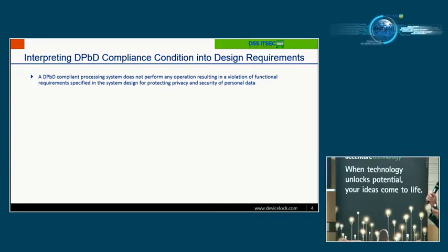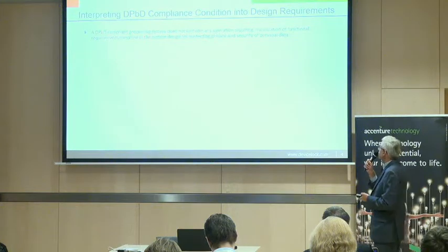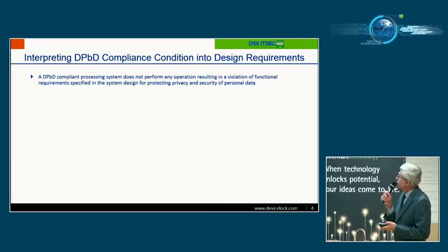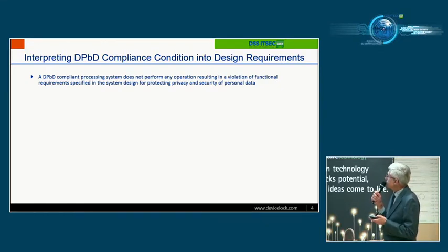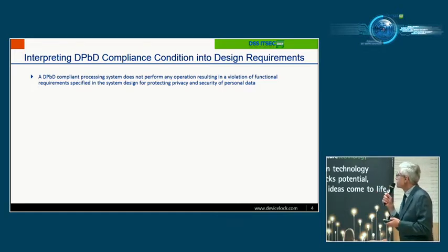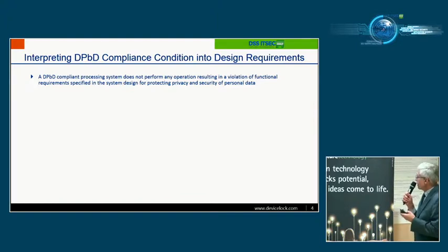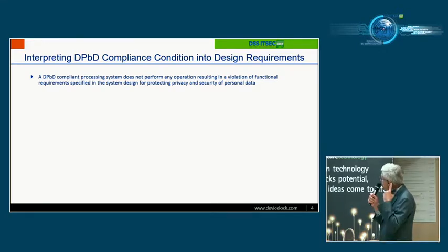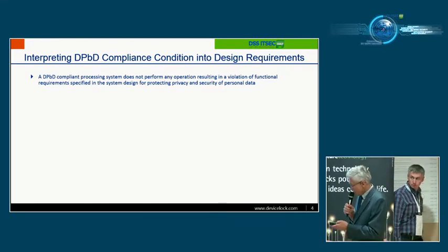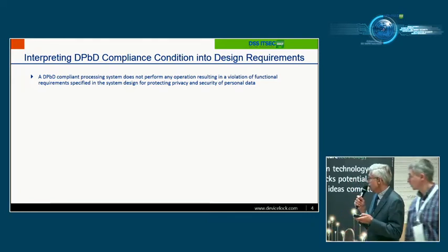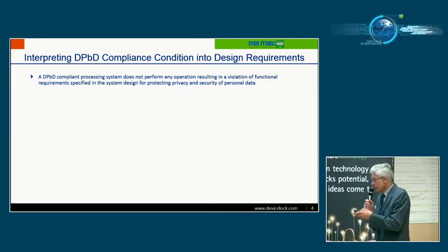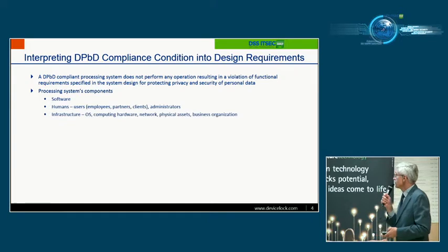To come to the second question of this presentation: the general data protection by design condition is that a compliant processing system must not perform any operation resulting in a violation of functional requirements specified in the system design for protecting privacy and security of personal data. Let's try to get this into a graphical metaphor to understand whether DLP is required or not.